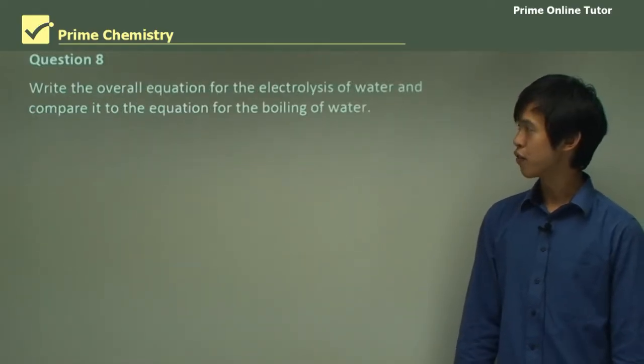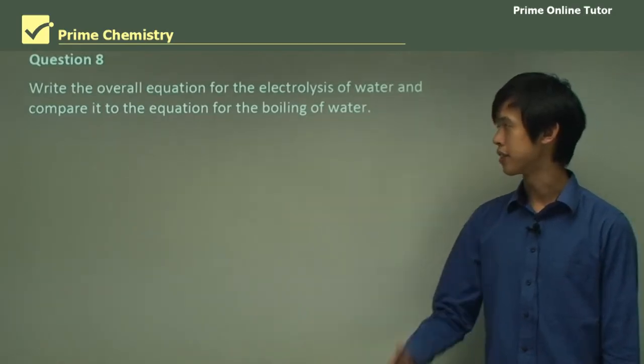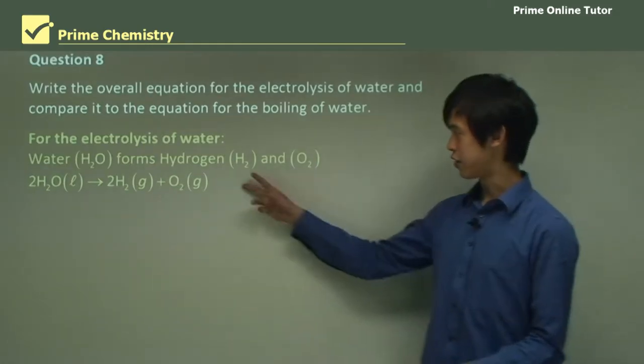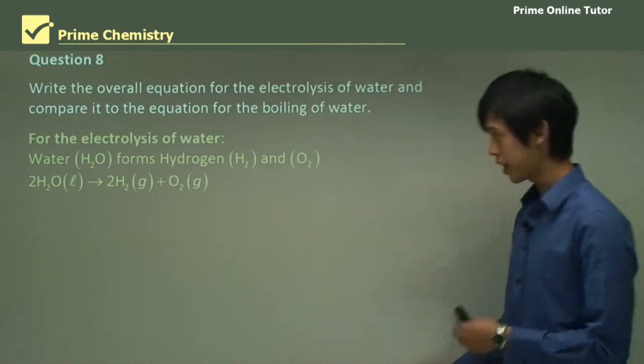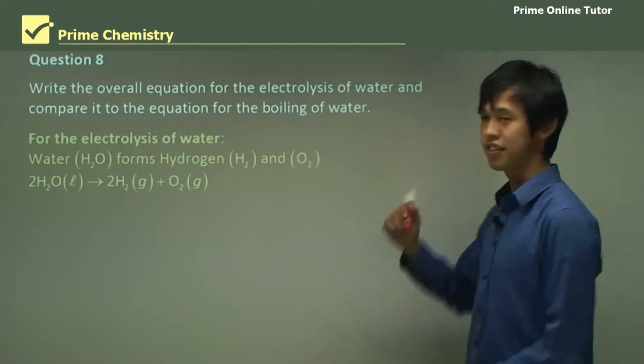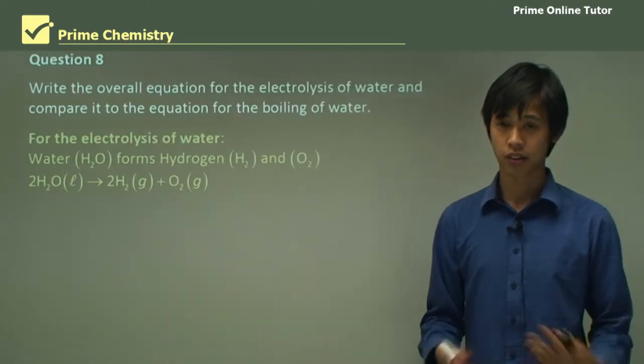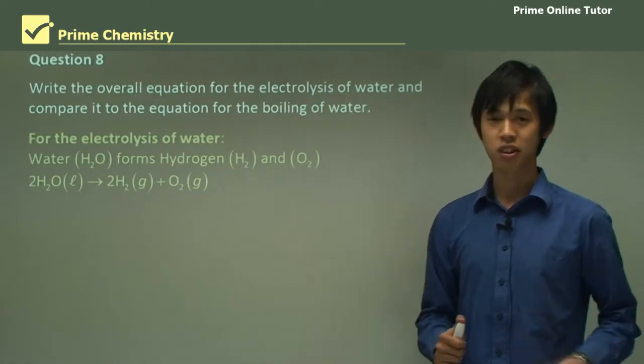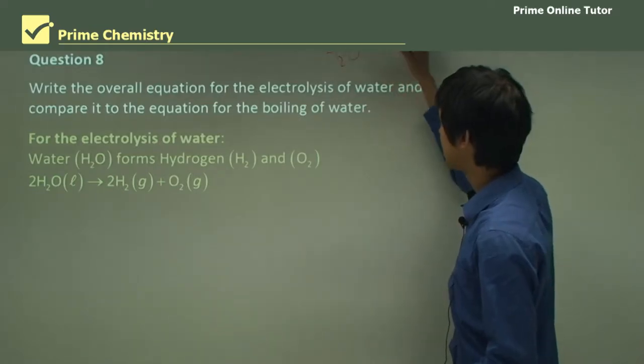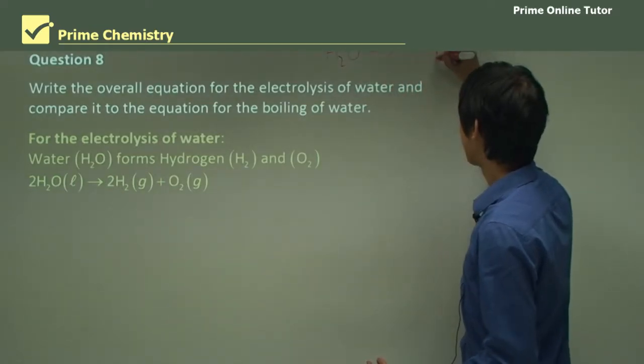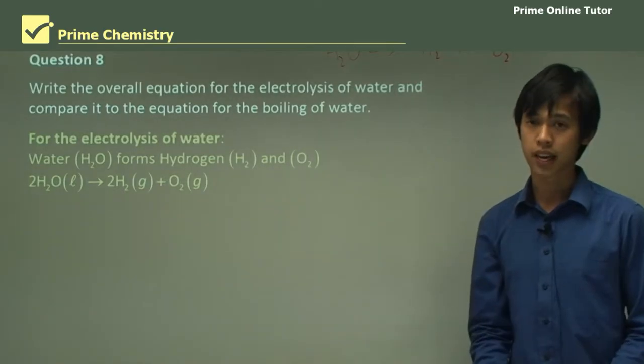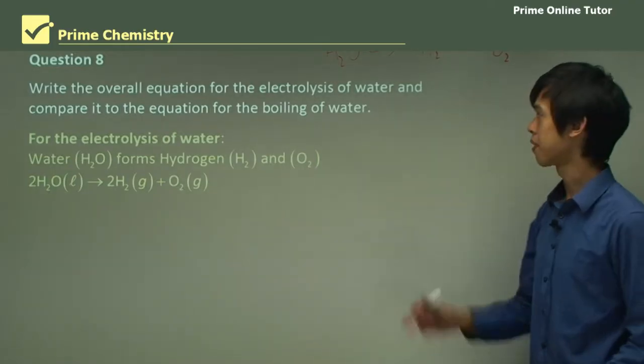Question 8: Write the overall equation for the electrolysis of water and compare it to the equation for the boiling of water. Water, H2O, forms hydrogen and oxygen and it's this equation. To work that out, you can simply just write what you know first. This is a really good way of answering a question because chemical equations only balance in a certain number of ways. By writing out all the things you know, you can pretty easily balance this thing out. You know that water turns into hydrogen and oxygen, and you know that hydrogen and oxygen both exist as diatomic gases because you've been studying chemistry very hard.